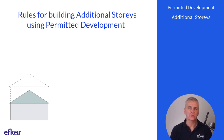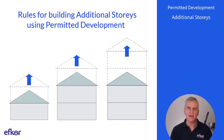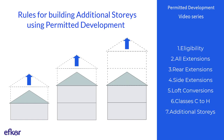In this video I go through the rules for adding one or two stories using class AA of permitted development. This is video number seven in a series of videos that started with video number one covering eligibility for permitted development. It's recommended that you watch video number one before you watch this one.